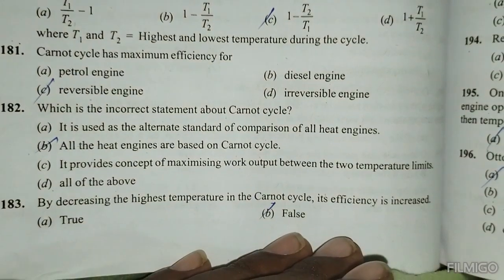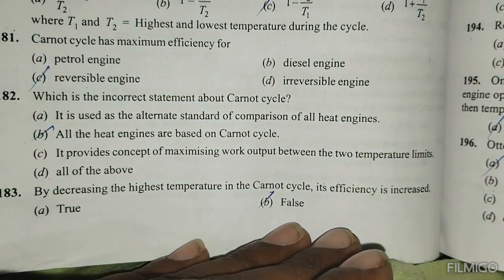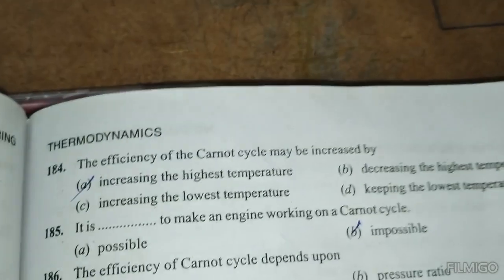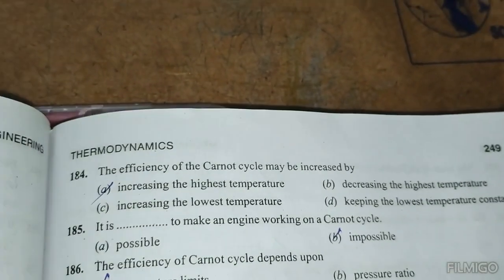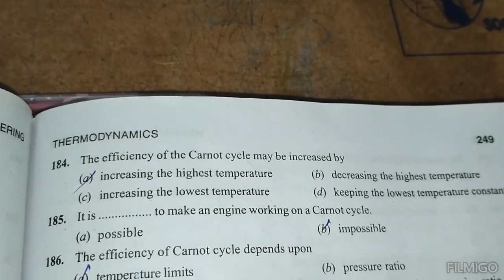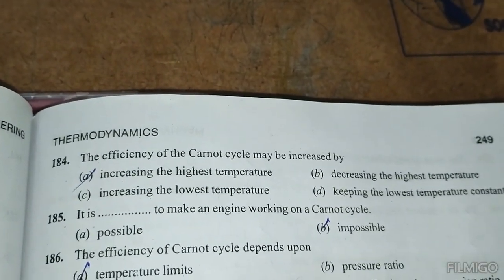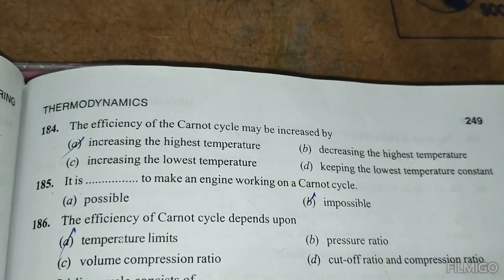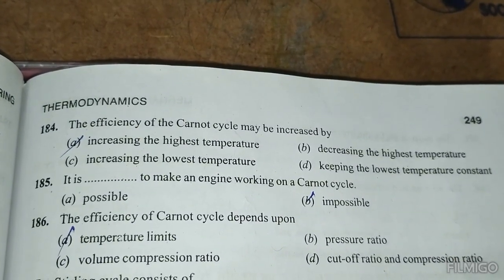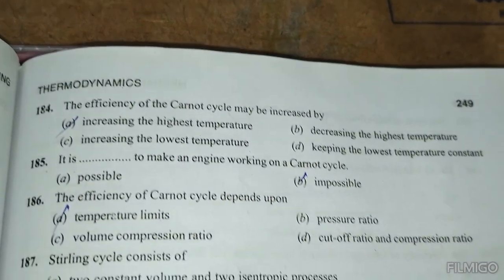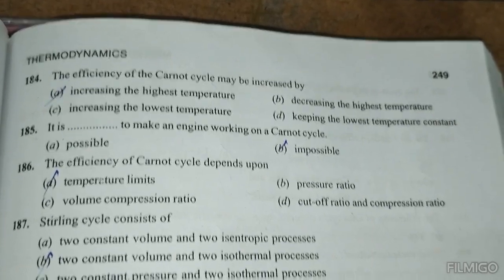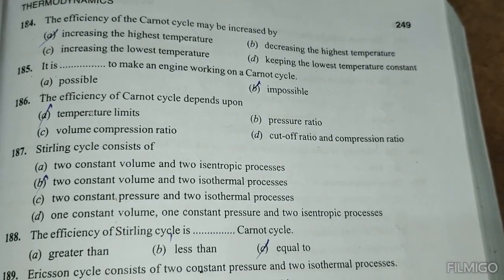By decreasing the highest temperature in the Carnot cycle, the efficiency increases — this is false. The efficiency of the Carnot cycle may be increased by increasing the highest temperature. It is impossible to make an engine working on a Carnot cycle. The efficiency of the Carnot cycle depends upon temperature limits.